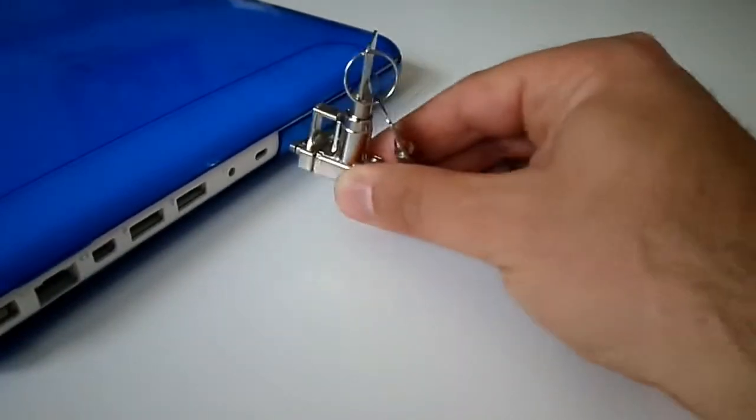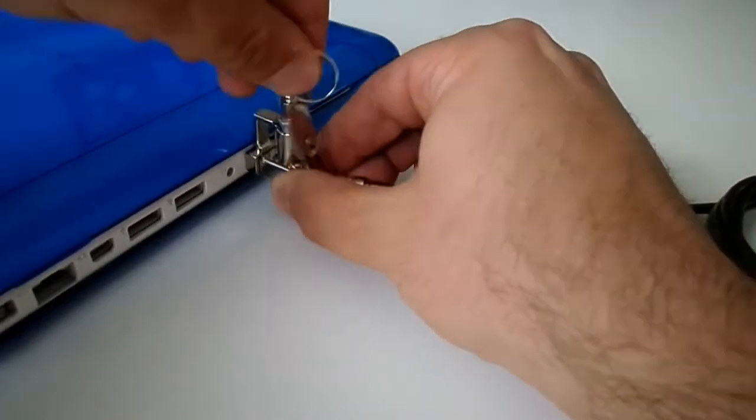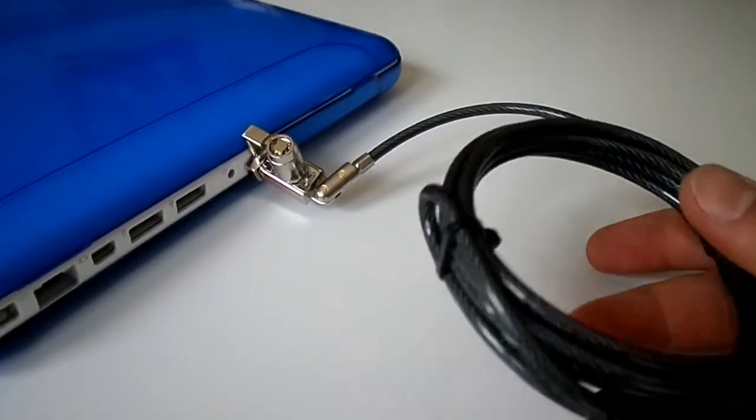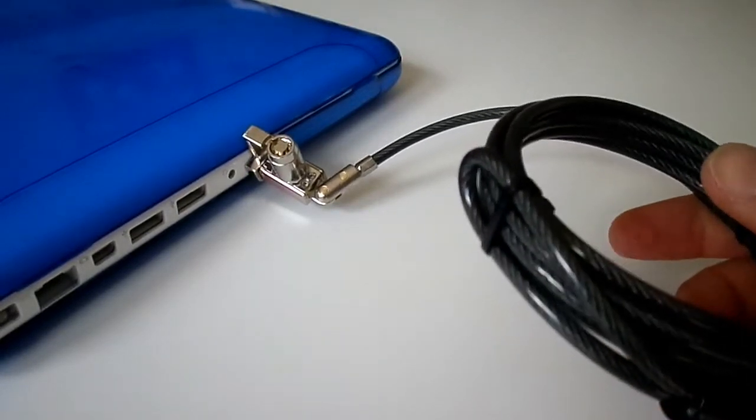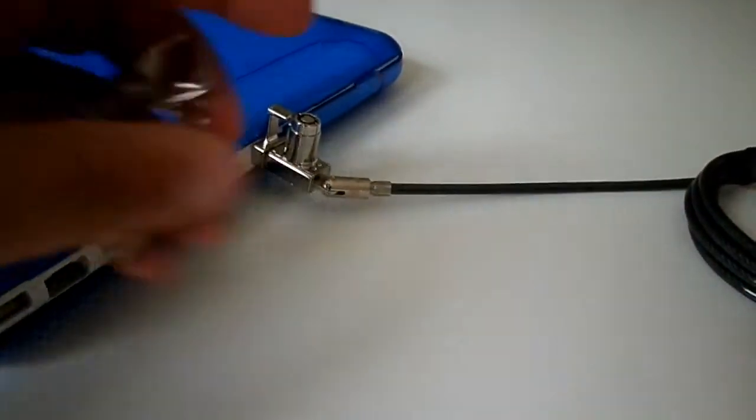So there we have it. We just pop that in, turn 90 degrees. You would loop this around a chair leg or a table leg or an anchor point, but that is locked. It's a very nice product and we like it.